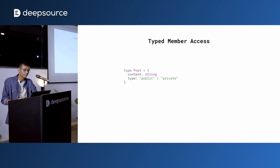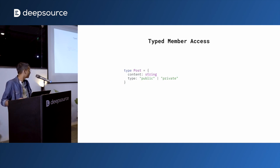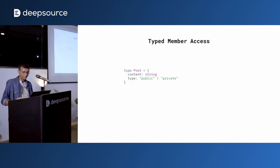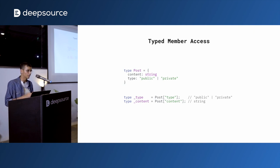Moving on, we have typed member access. So you have a type called Post — think of it as your tweet or social media post. It has a field called content with type string, and a type for visibility which is public or private. I can use the member access operator to get types out of the Post type. So Post['visibility'] gives me a union type of public and private, and Post['content'] gives me the string type.